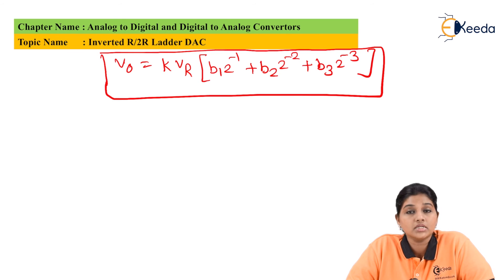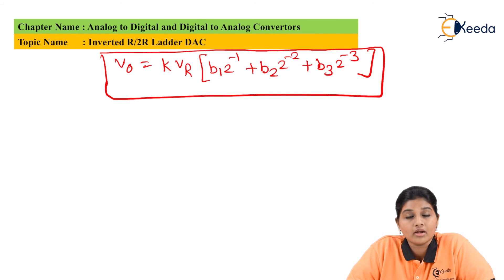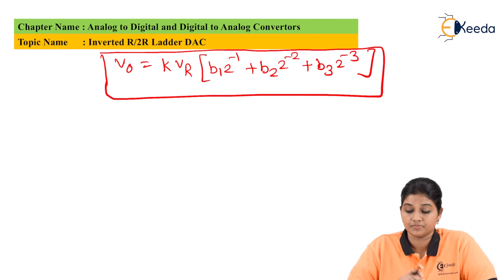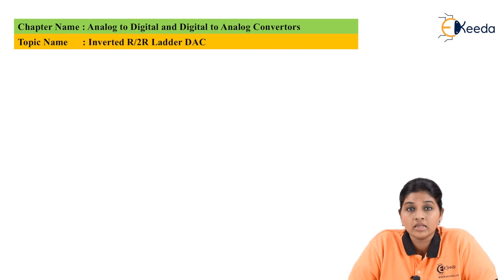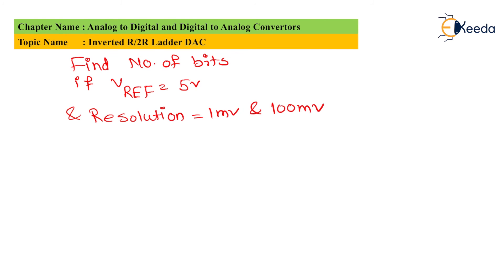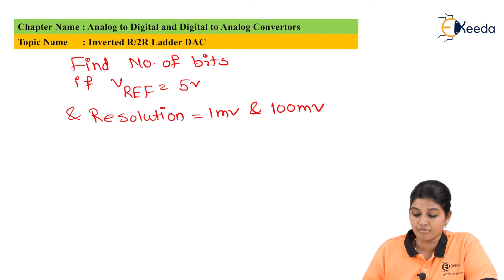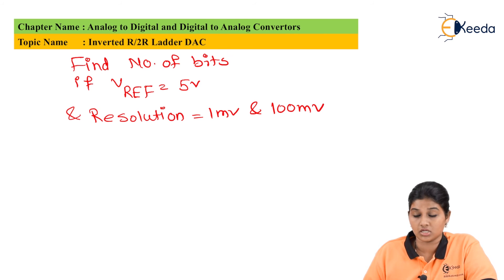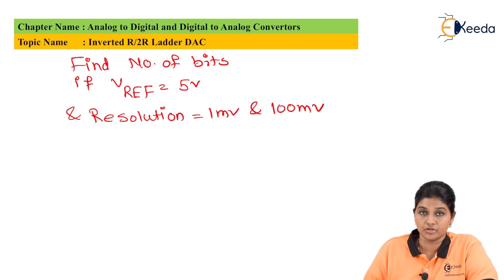Now let us understand the concept in detail by considering one example. In this problem, we need to design an R2R ladder network for a certain resolution. We need to find out the number of bits, given that V reference is 5V and two values of resolution are given: first is 1mV and second is 100mV.